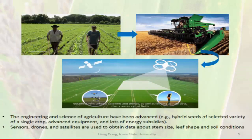Farming has been going on for several thousands of years. Traditional farming always relies on tilling the field to get it ready for planting, planting the seeds, and waiting, hopefully, for it to rain enough to produce a crop. In recent years, the engineering and science of agriculture has advanced—hybrid seeds, equipment, irrigation, fertilizers, and pesticides are synergized to form modern agriculture.